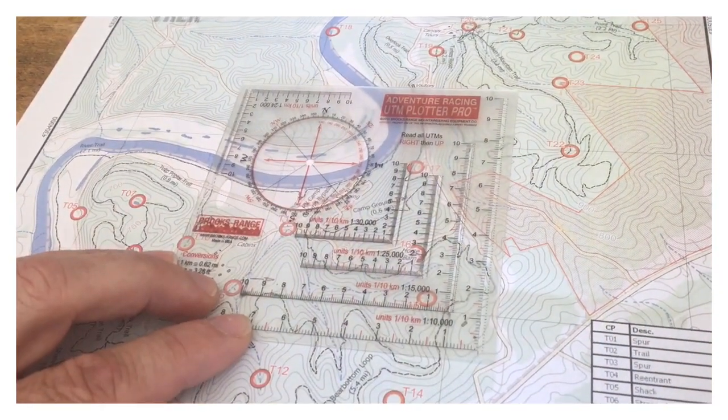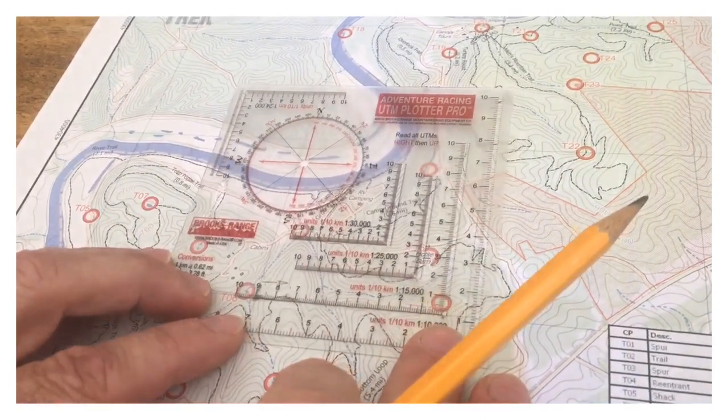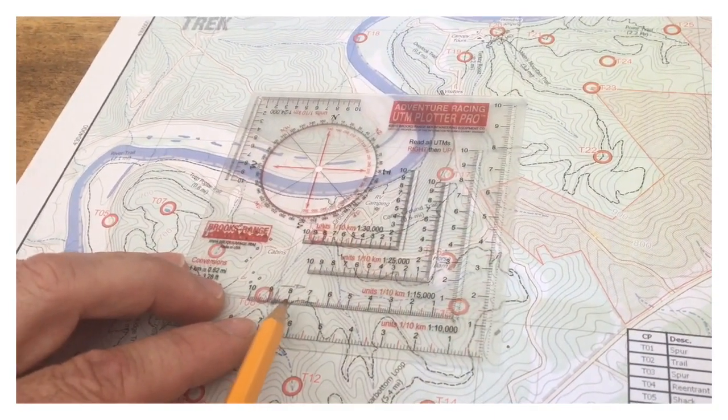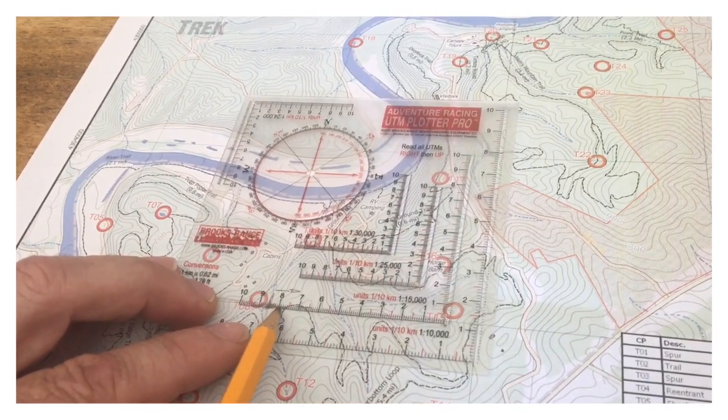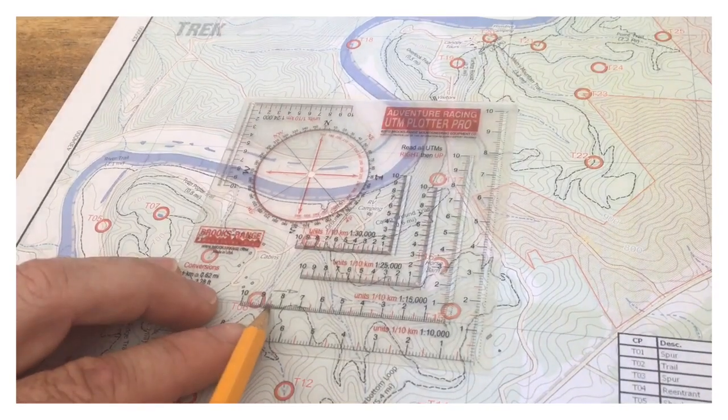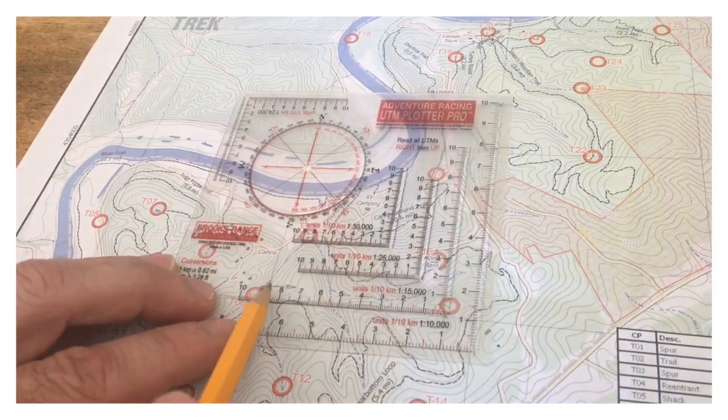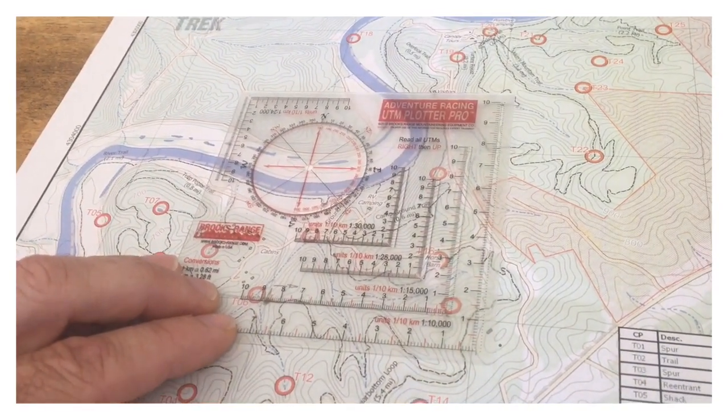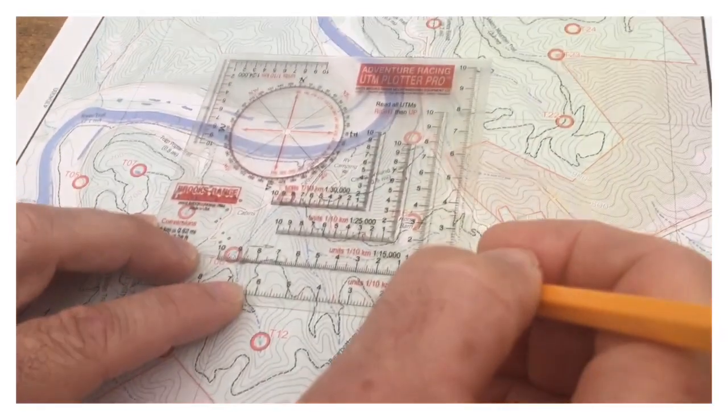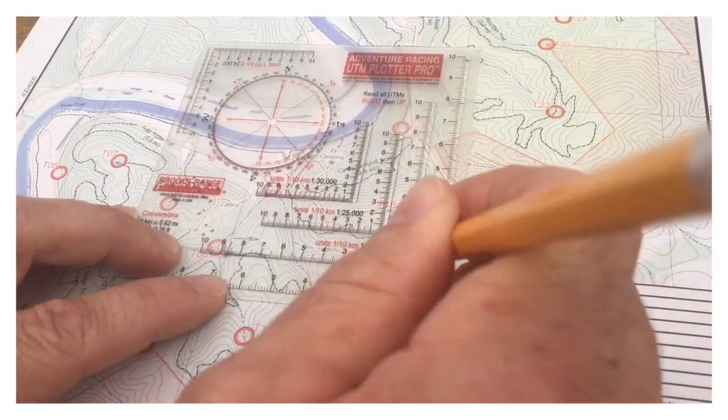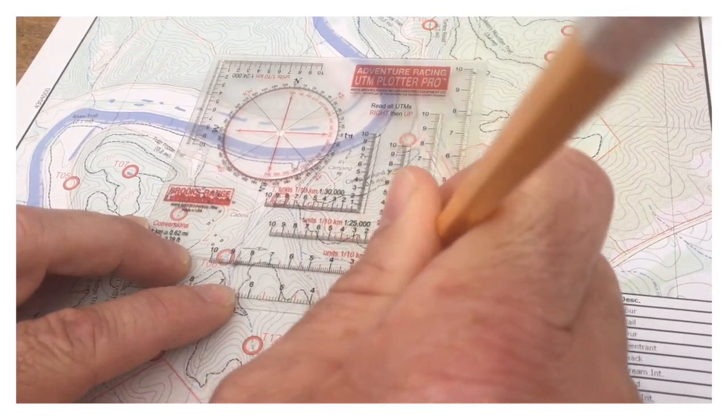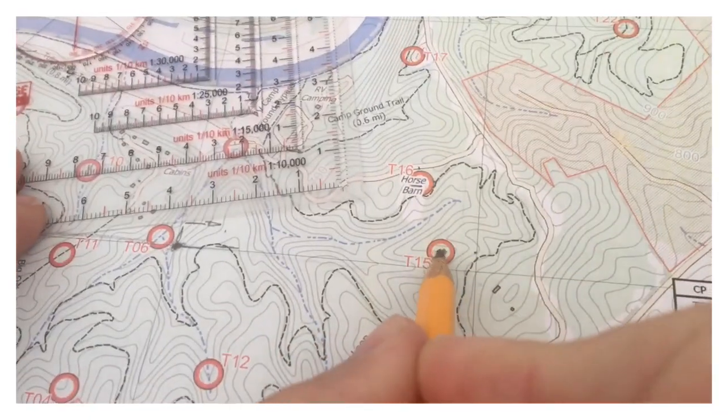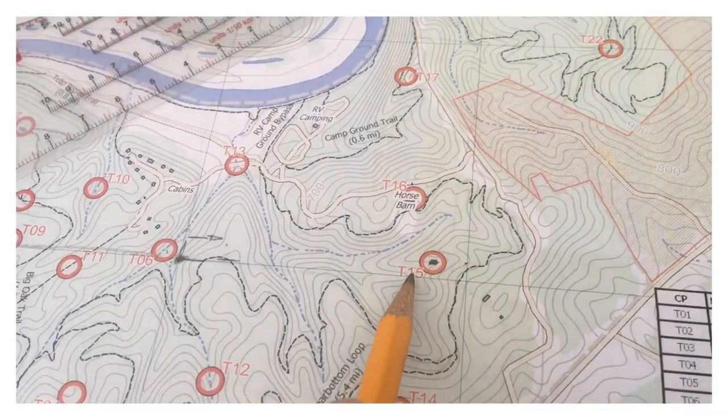On this scale here, I'm going to find 800, which is 8 and 70, and line that up right here. That's on basically my coordinate line that I originally found. Then I can go up 60. It has a little groove where I can put my pen through and I've gone up 60. You can see that's plotted right in the middle of T15, which is the checkpoint I wanted.